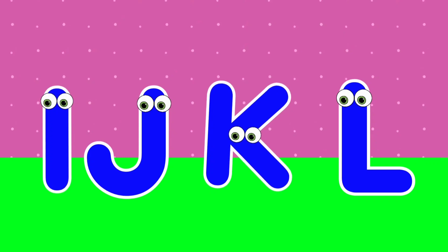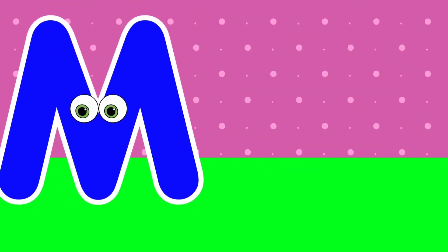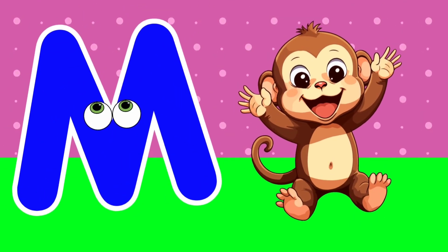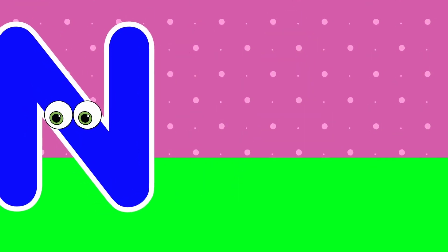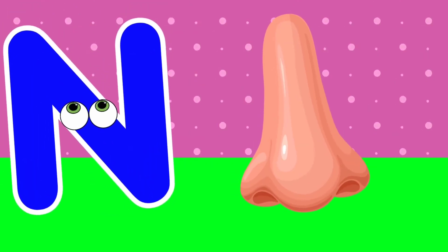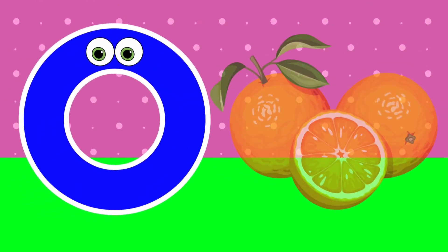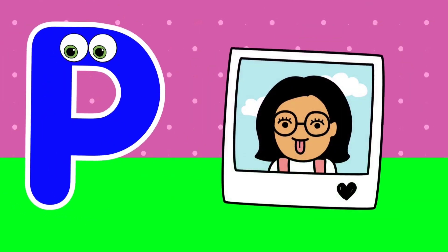M is for monkey. M, monkey. N is for nose. N, nose. O is for orange. O, orange. P is for picture. P, picture.